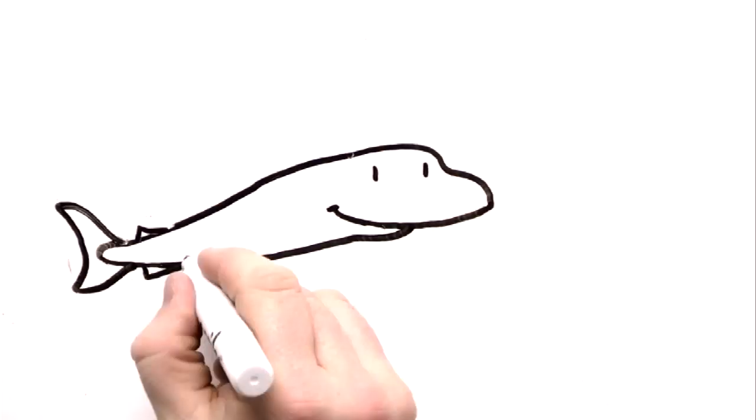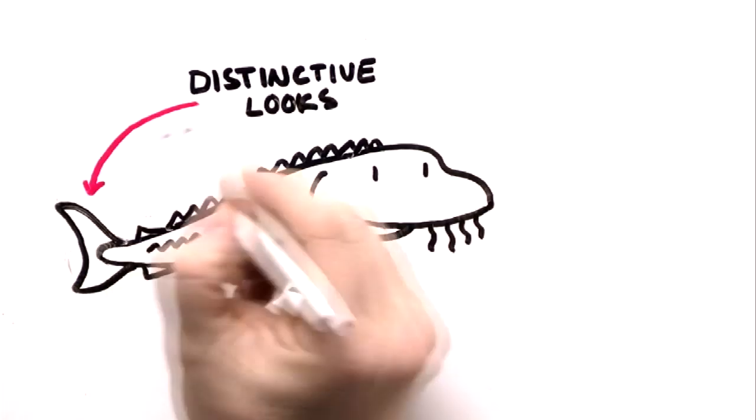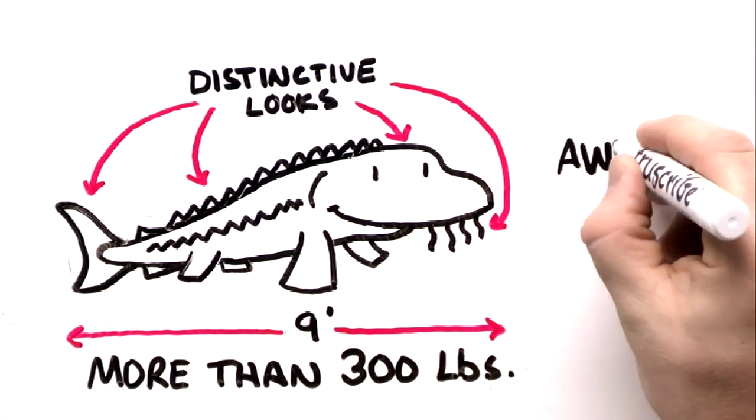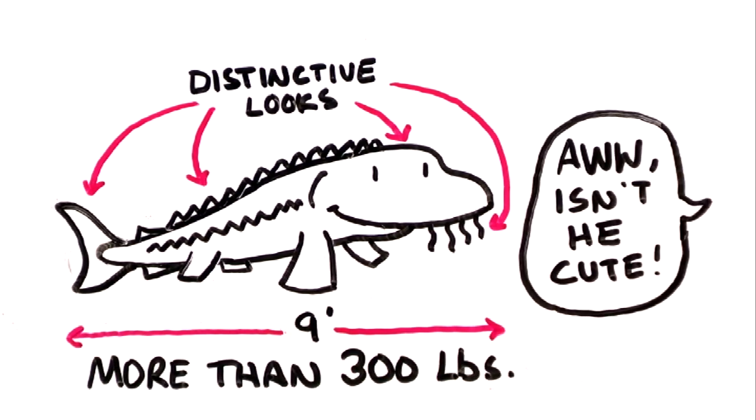In spite of their distinctive looks and massive size, sturgeon can grow to be 9 feet long and may weigh more than 300 pounds. Sturgeon are often called cute, friendly, and gentle.